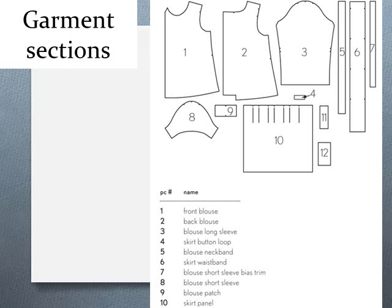Garment sections — you have all your pattern pieces and you make sure they are labeled. For example, piece one is the front blouse and piece two is the back blouse, and so on. All of these different garment sections are labeled.